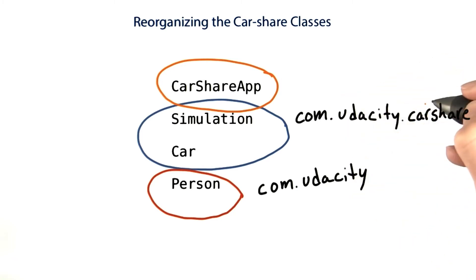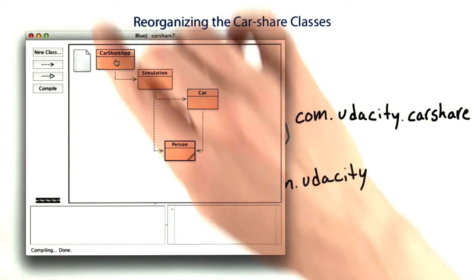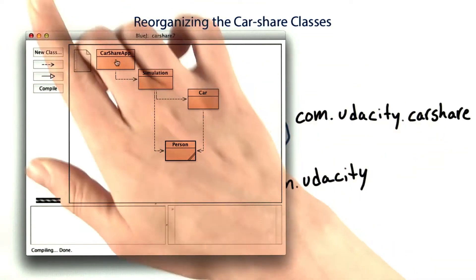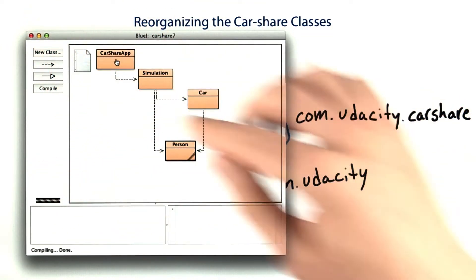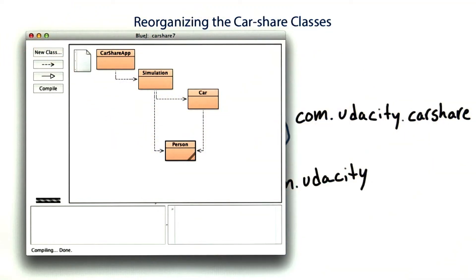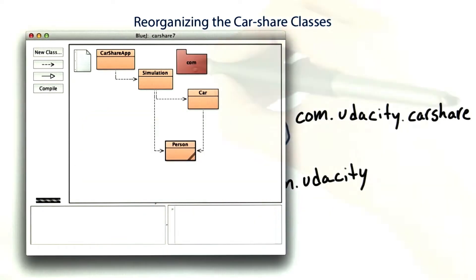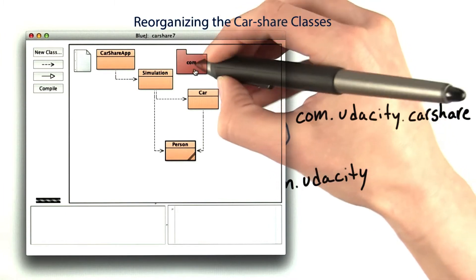Creating packages in BlueJay is a little bit funny, so I'll show you how to do this. From the car share project, I'm going to look up at the menu — it's at the upper left for me, but it might be right along the bar for you. I'll go to Edit, New Package, and then put in the package name: com.udacity.carshare. Now the package appears here in BlueJay.